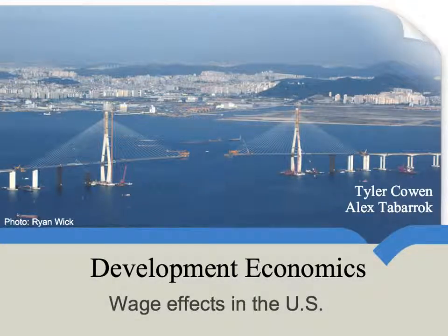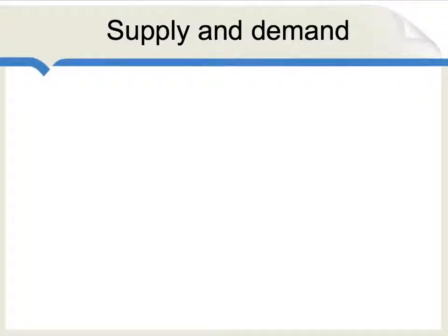This is mostly a class about development economics, but there's been so much debate about the effects of immigration on the receiving countries, I thought we'd cover that for just a bit. Sometimes observers have the mistaken intuition that because immigration increases the supply of labor, therefore it must lower wages in the receiving country. Let me first show you what that intuition looks like using supply and demand graphs, and then show you a better way to think about the problem.